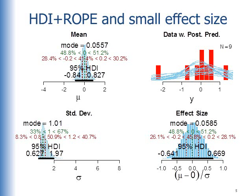If we use the HDI in ROPE, again it's the very same data. The bottom right shows this explicit estimate of the effect size. It says it's very small in magnitude, but it's hugely uncertain. It doesn't come even remotely close to falling inside the rope. Therefore, we would not accept the null, because we have such poor certainty in our estimate.